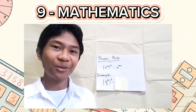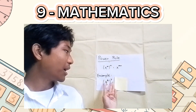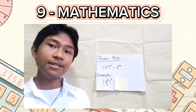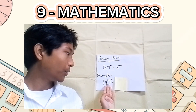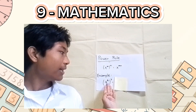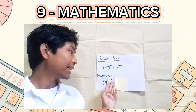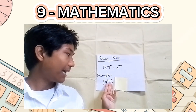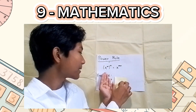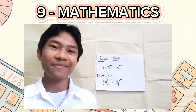Let's try to solve an example. Here we have q raised to 9 raised to the third power. The first step in solving this is to copy the variable q, and then we will multiply the exponents. So 3 times 9 is equal to 27. So the correct answer here is q raised to 27.